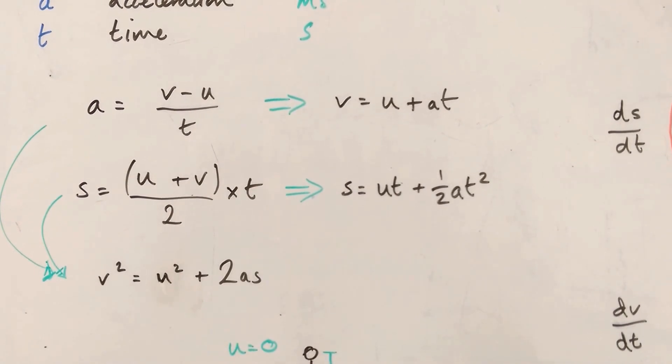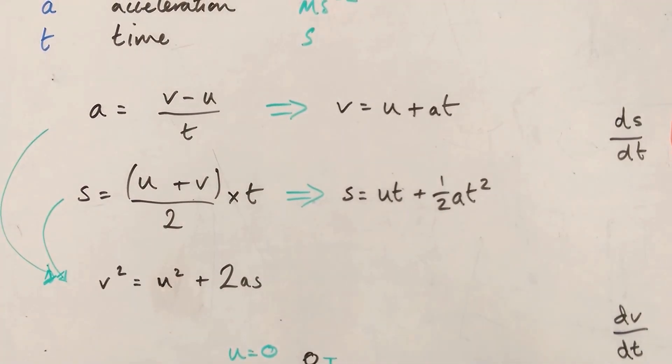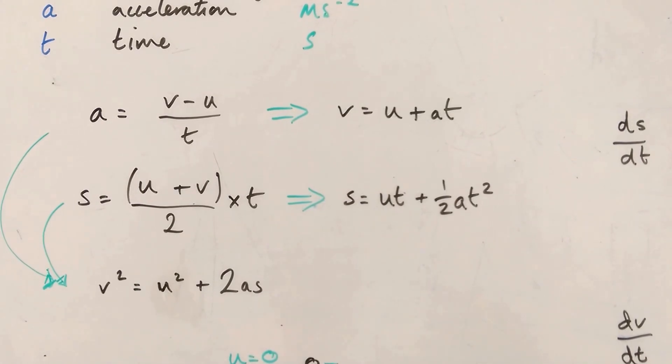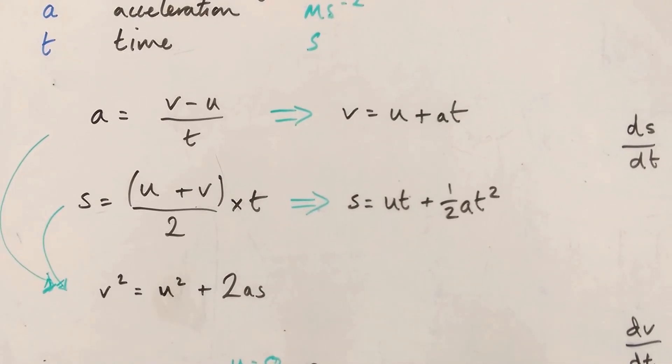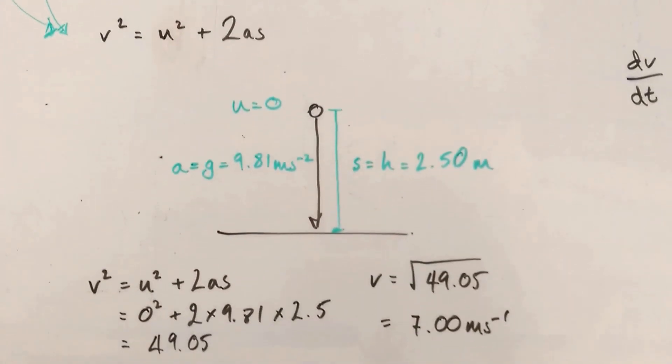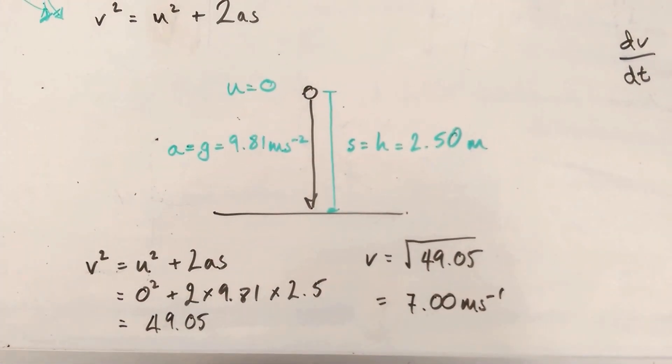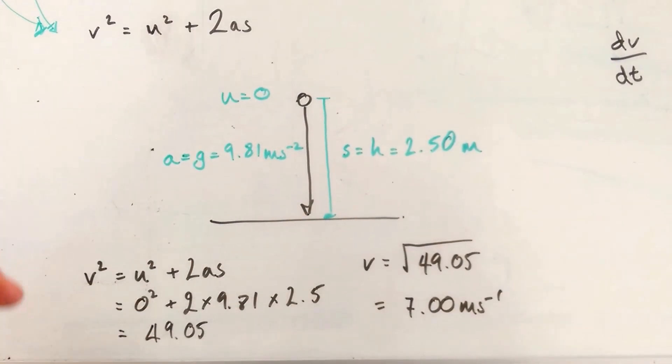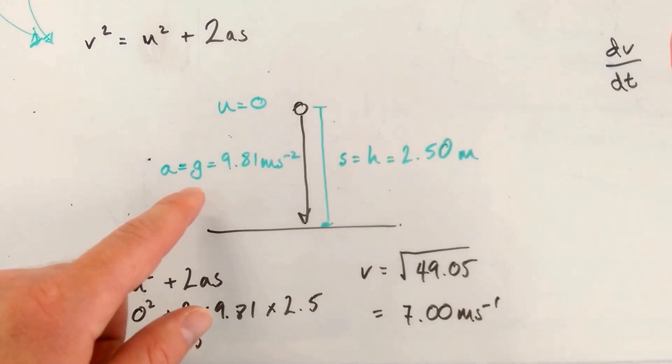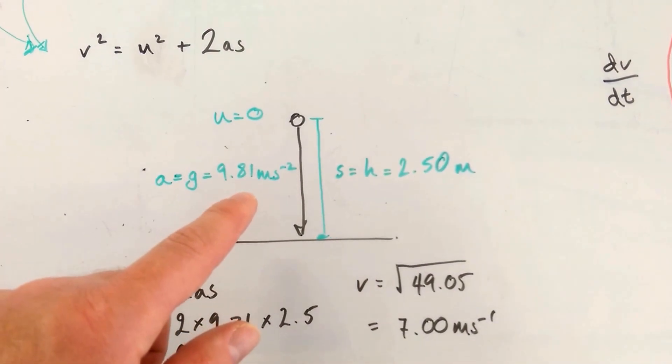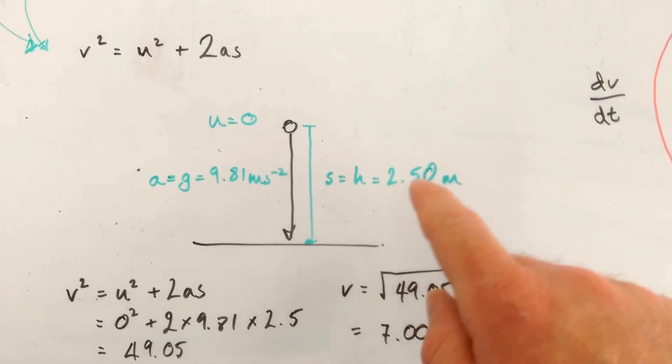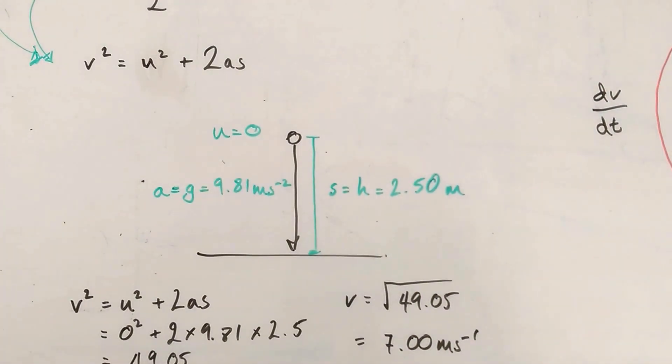Well, how do you use them? Well, what you are always going to be given is enough of the data to use one of them to calculate one unknown. So here's a situation that I've just thought up, which is you're dropping an object from initially 0 meters per second squared initial speed. Acceleration is gravitational acceleration, so it's 9.81 meters seconds to minus 2. And displacement is going to be the height, which is 2.5 meters.